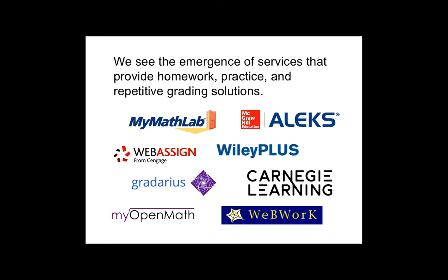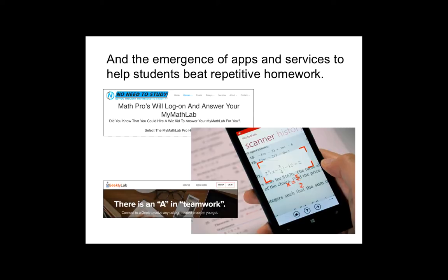We have all sorts of an ecosystem that helps us do repetitive problems. Now, of course, as soon as you create an ecosystem that allows you to do repetitive problems, an ecosystem arrives that helps students cheat at doing repetitive problems. And so we have all sorts of ways that that happens, too, right? From phone scanners of problems on the text to teams of people you can help. There is an A in teamwork. This is about helping you cheat in your math class, by the way. It's very nice marketing.